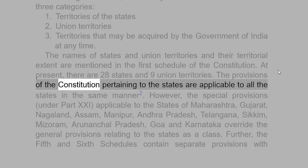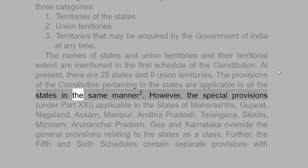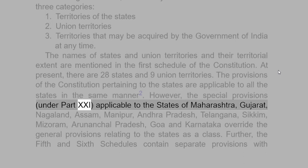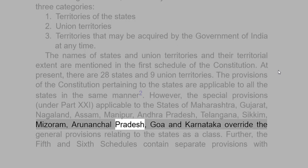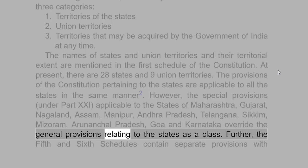The provisions of the Constitution pertaining to the states are applicable to all the states in the same manner. However, the special provisions under Part 21 applicable to the states of Maharashtra, Gujarat, Nagaland, Assam, Manipur, Andhra Pradesh, Telangana, Sikkim, Mizoram, Arunachal Pradesh, Goa and Karnataka override the general provisions relating to the states as a class.